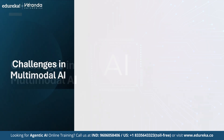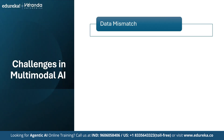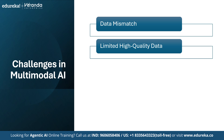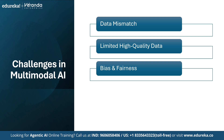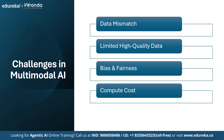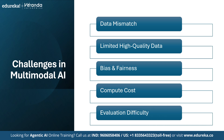Why is true multimodal AI still hard? First is data mismatch: text is sequential, images are spatial and audio is temporal, so aligning them perfectly is difficult. Next is limited high-quality data — billions of image-text pairs exist but have noise and bias. Then there's bias and fairness: models learn cultural and social biases from multimodal data, for example stereotypes in images and captions. The next challenge is compute cost — training needs huge GPU clusters, for example hundreds of A100 GPUs, and fine-tuning multimodal models is even more expensive than text-only. Finally, there is evaluation difficulty: measuring reasoning across modalities has no single easy benchmark. While multimodal AI is powerful, it's also data-hungry, compute-heavy and still evolving.